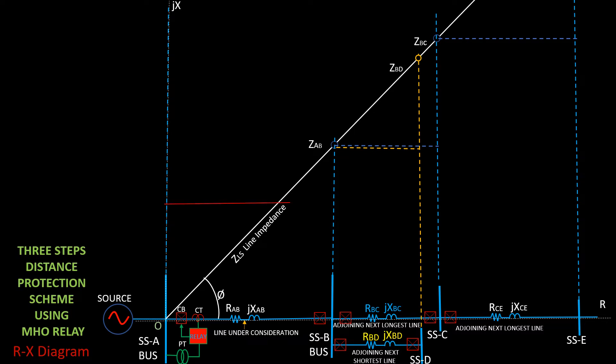Zone one protection: eighty percent of line length between substation A and substation B. Twenty percent is unprotected by zone one. Z1 is the impedance of the protected zone 1.